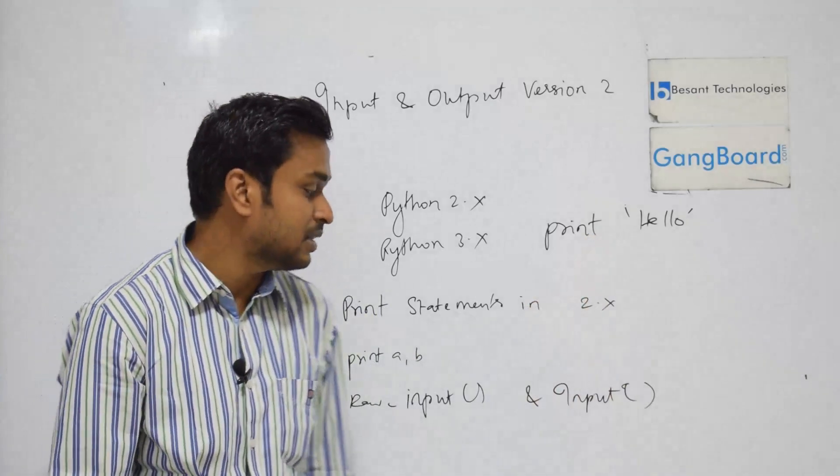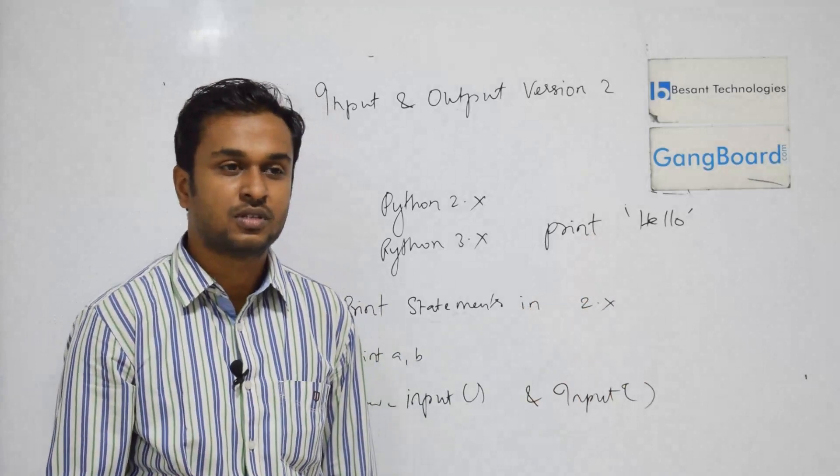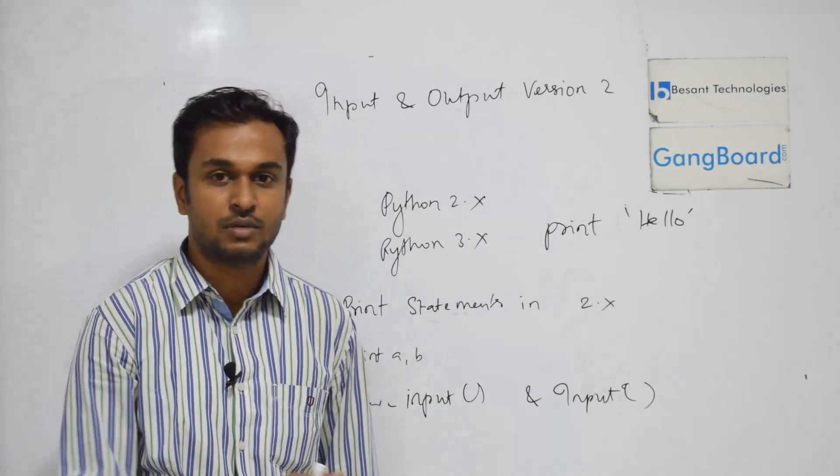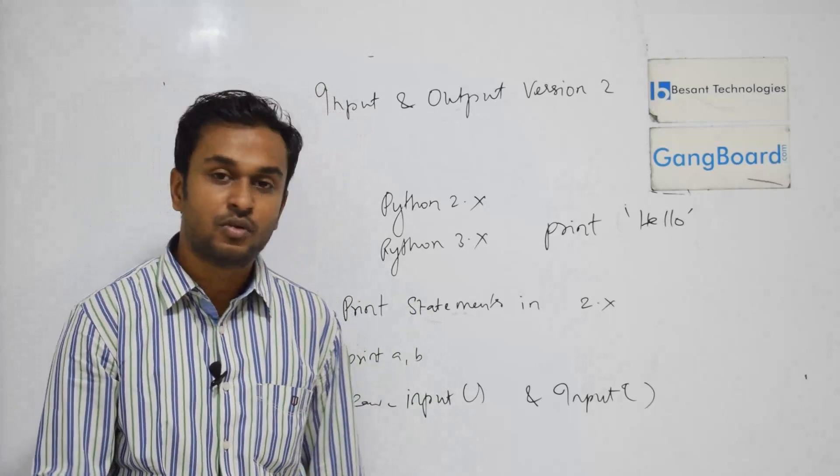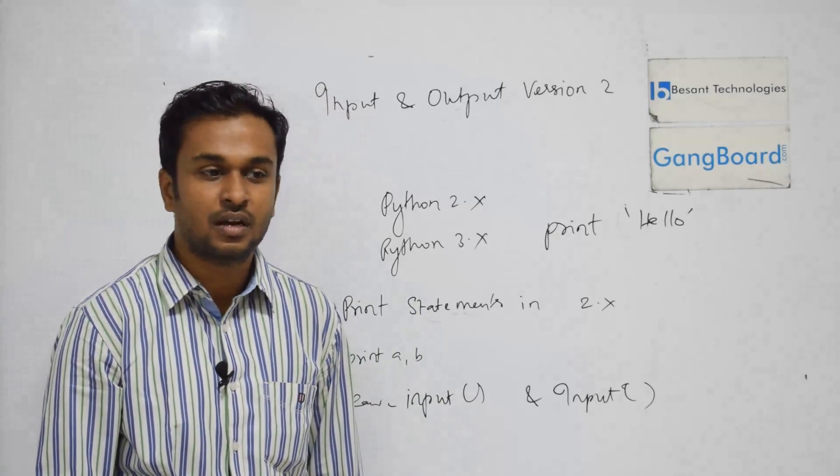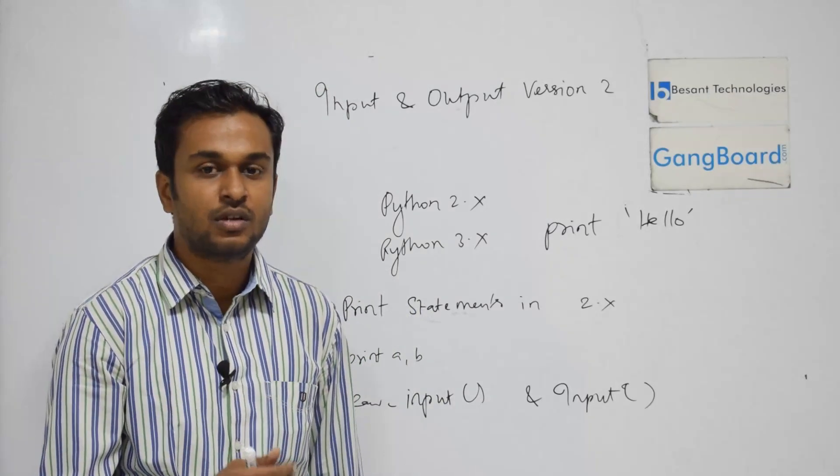Input statements - Python 2 has two major types of input. One is raw underscore input, and another is input. The difference is the raw input - it is going to be considered as a string.